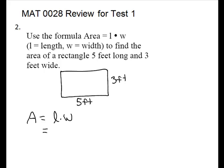Our formula area equals length times width. You substitute. So 5 feet times width is 3 feet. Just multiply. 5 times 3 is 15. And feet times feet is feet squared. Works just like a variable. Like x times x would be x squared.